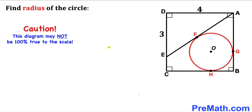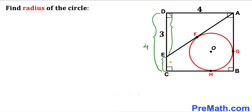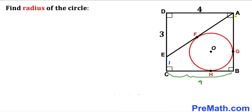Please keep in mind that this figure may not be 100% true to scale. In our first step, since we are dealing with square ABCD, the whole side length is 4 units and this side length DE is 3, so side length EC is going to be 1. Likewise, all other side lengths are 4 units each.